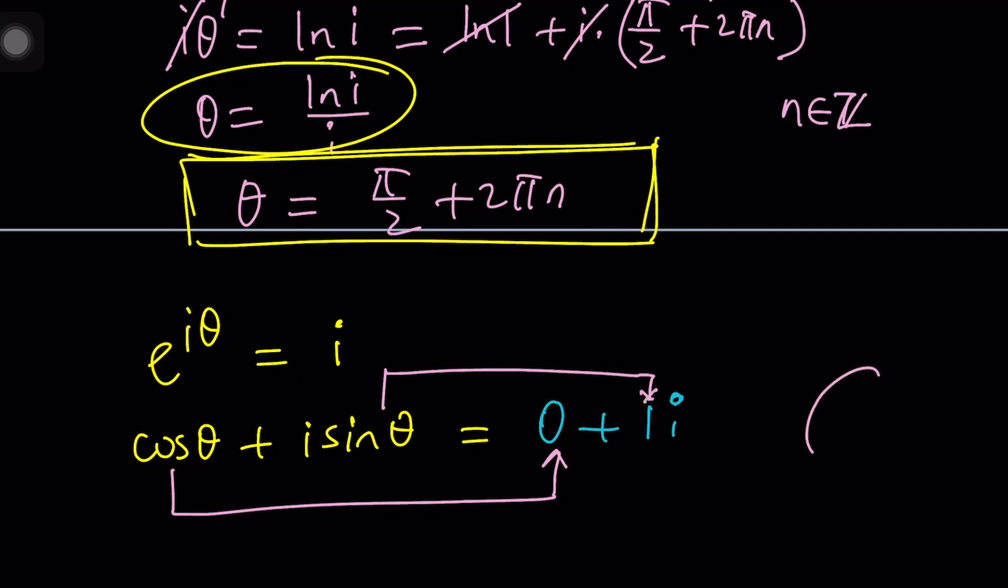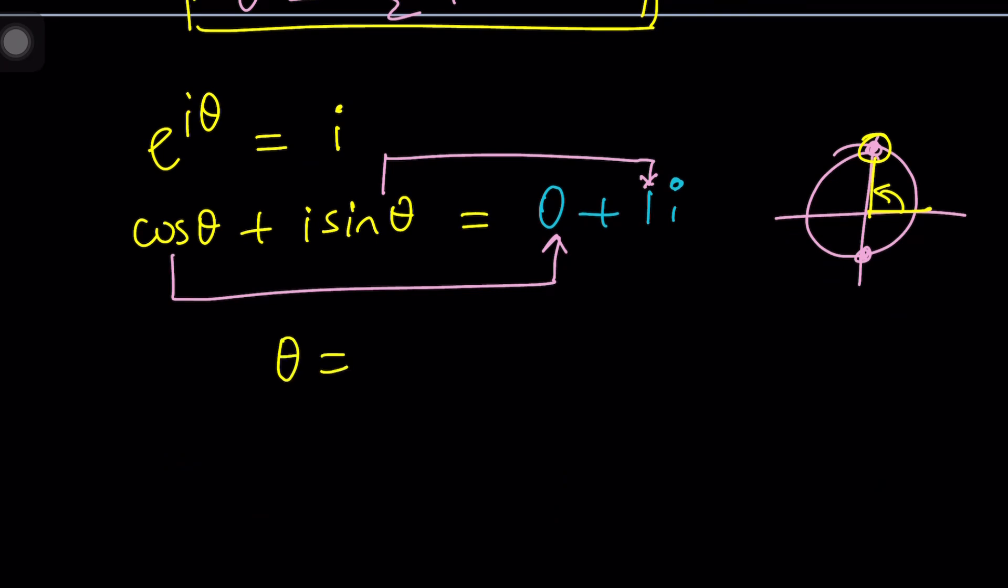What does that tell you? Think about the unit circle. You should know this. Cosine is 0 here and here. Sine is 1 in only one place. And that will be right here, which indicates pi over 2. But of course, you're allowed to add multiples of 2π, which pretty much gives us the same answer.